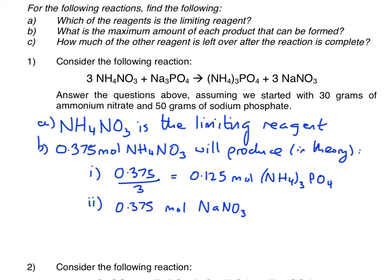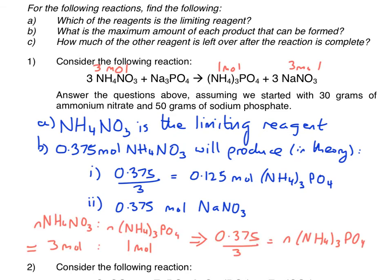So what we're doing here in Part B is looking at the mole ratio between ammonium nitrate on the left-hand side and the products on the right-hand side. So if we take the mole ratio of ammonium nitrate to ammonium phosphate first of all, you can see from the equation that it's a 3 to 1 mole ratio, hence why I divided 0.375 by 3, which you can now see annotated on the equation.